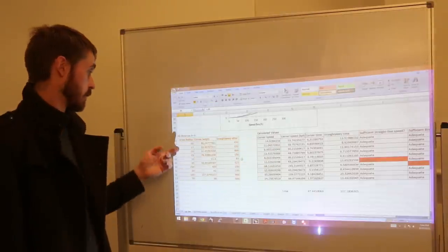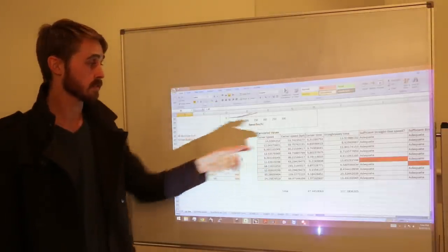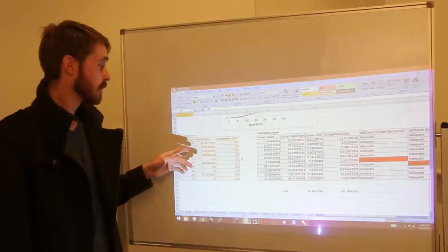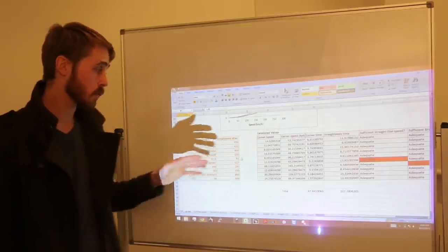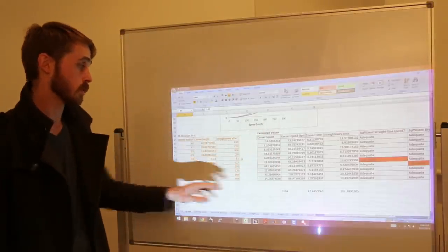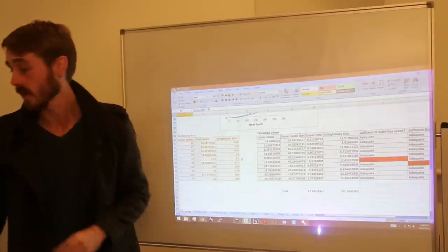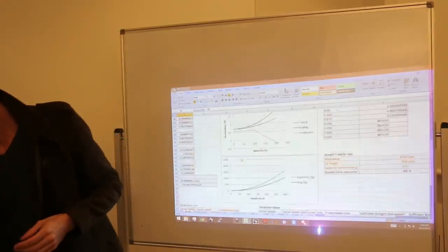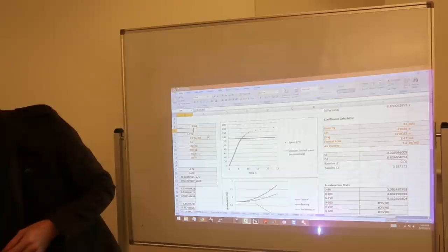If we have a look here at our cornering speeds with the standard negative 1.9 CL, we can see that we're at about a 30 meter corner radius is about 53 Ks an hour, 17 meter corner radius 40 Ks an hour, and a 100 meter corner radius at 109 Ks an hour. Now if we are to increase that to negative 2,